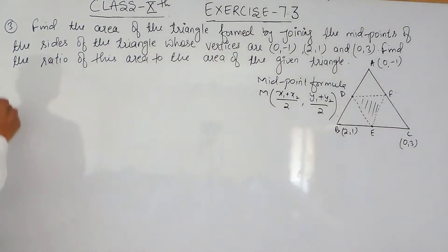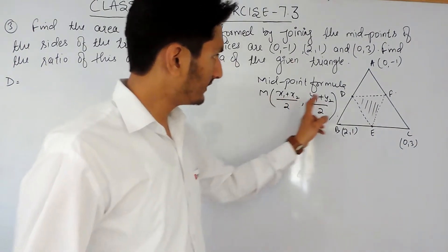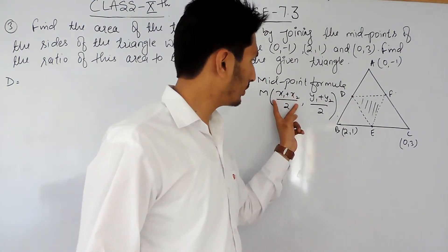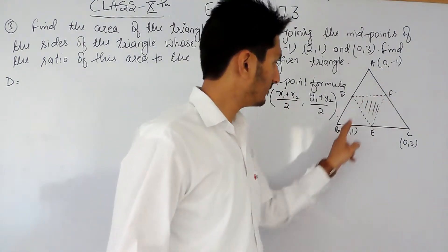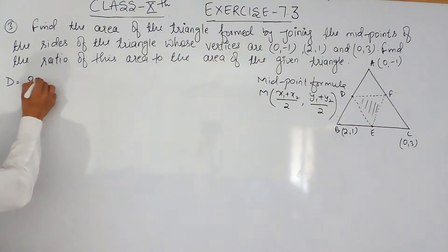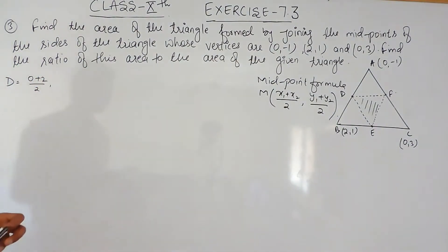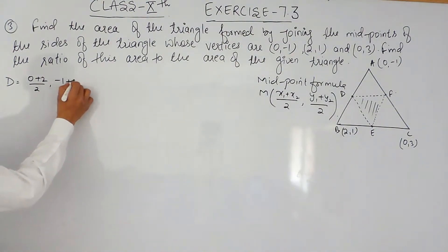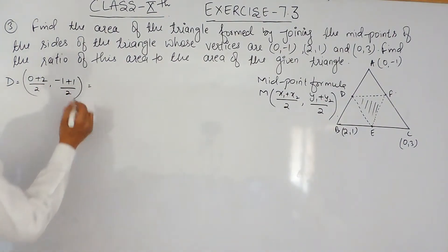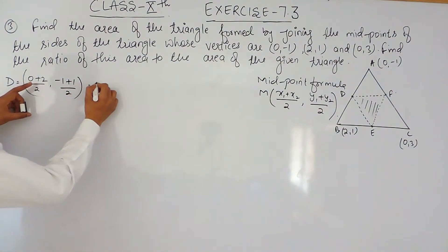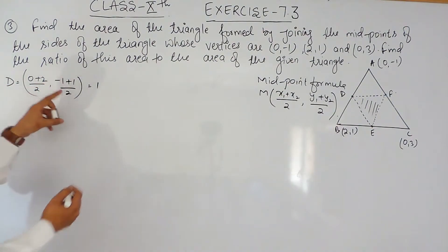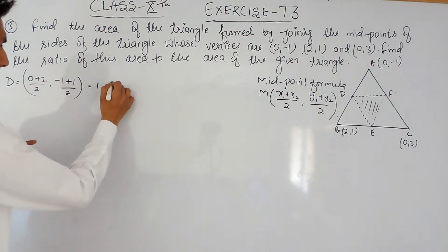Now let's find the coordinate for D using the same formula. D is the midpoint of AB. For the x-coordinate, it will be (0 + 2) / 2. For the y-coordinate, it will be (y1 + y2) / 2, which is (-1 + 1) / 2. So 2 divided by 2 is 1 for x, and (-1 + 1) = 0, so the y-coordinate is 0. Therefore D = (1, 0).